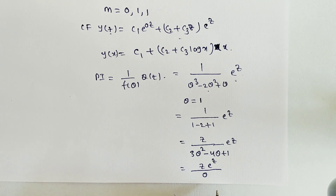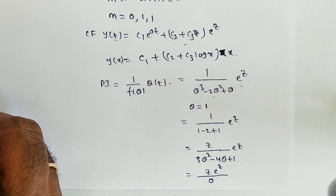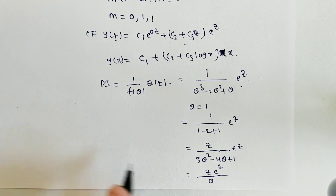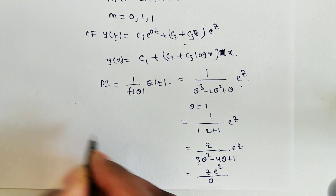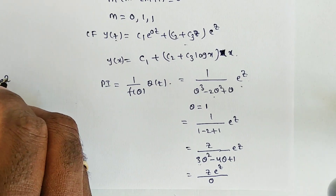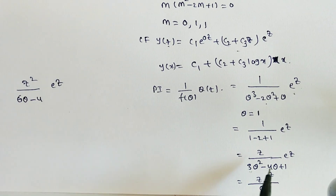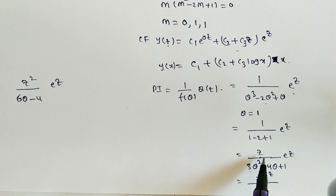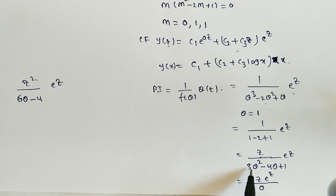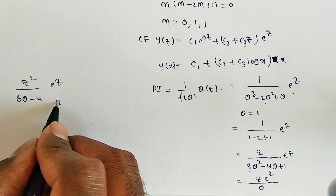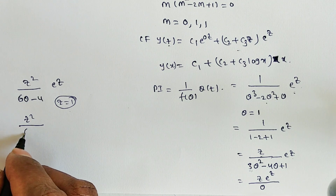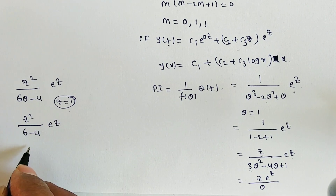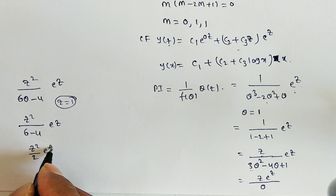Since we again get 0 in the denominator, we multiply the numerator by z again (giving z²) and differentiate the denominator again with respect to θ: derivative of 3θ² - 4θ + 1 is 6θ - 4. Substituting θ = 1: 6 - 4 = 2. So PI = z²/(2) · eᶻ. Replacing z = log x and eᶻ = x: PI = (log x)²/2 · x = x(log x)²/2.